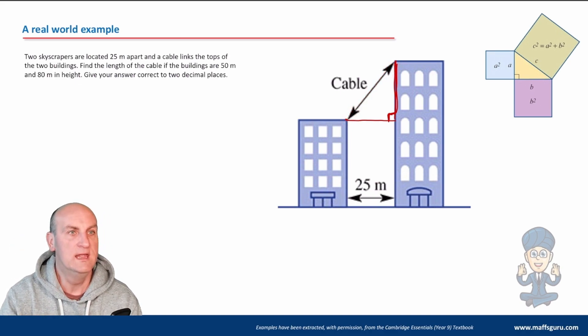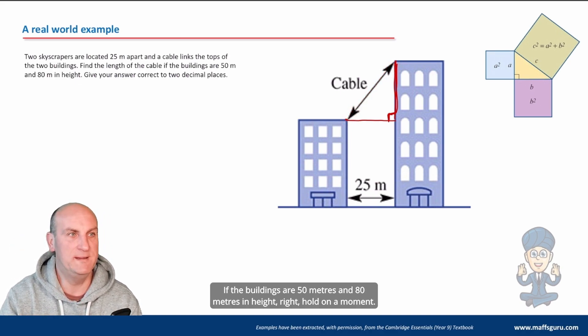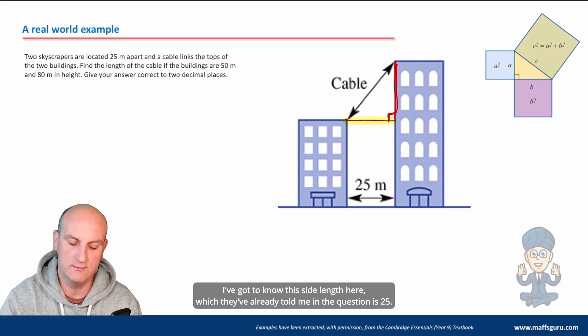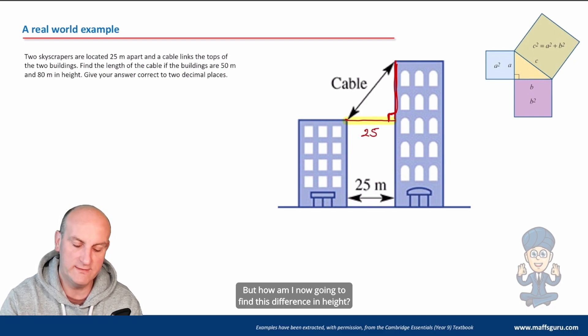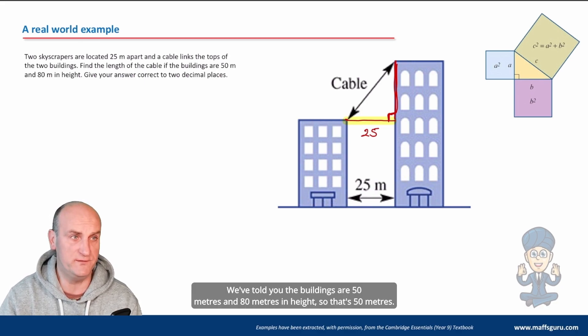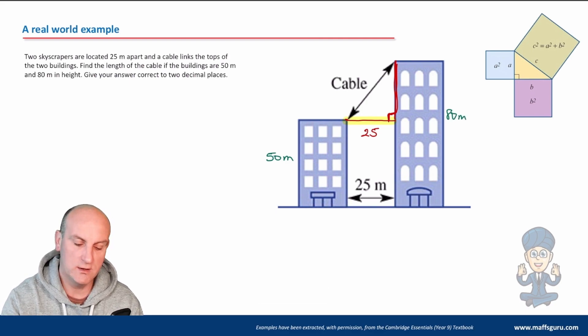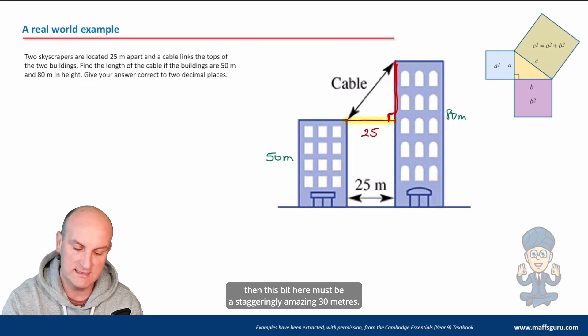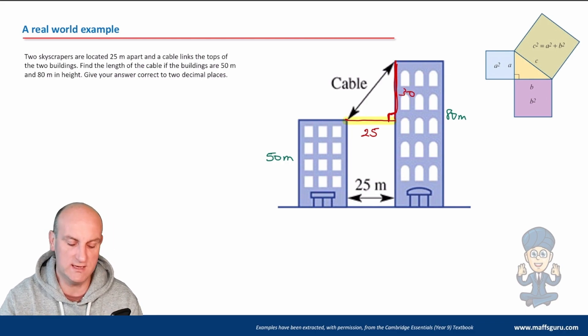Now let's see where we go. Find the length of the cable. So it's now saying find this length. My mind is now going Pythagoras theorem. If the buildings are 50 meters and 80 meters in height, well, to be able to do this, they've got to give me two side lengths. I've got to know this side length here, which they've already told me in the question is 25. But how am I now going to find this difference in height? We're just trying to obscure the information for you. We've told you the buildings are 50 meters and 80 meters in height. So the difference must be 30 meters.